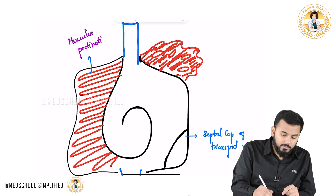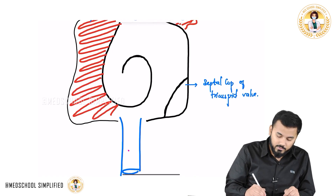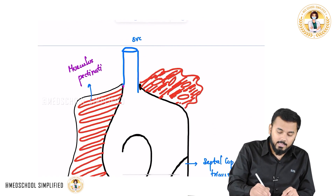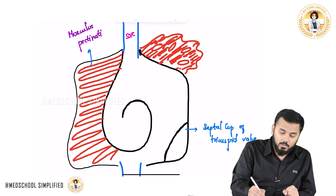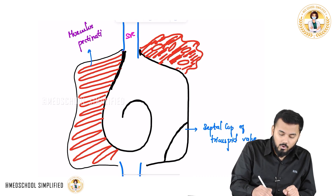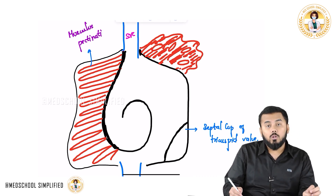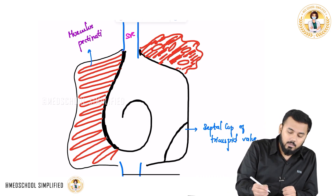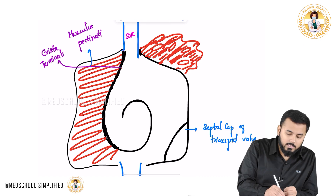These are called as musculi pectinati. Next important thing — all the way from the superior vena cava down to the inferior vena cava, you can see a line coming down. This dark line which you can see coming down all the way till the inferior vena cava is called as Crista Terminalis.